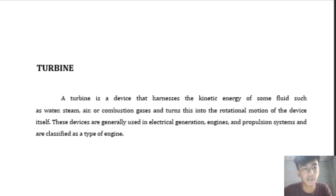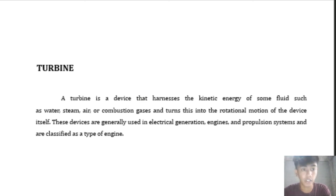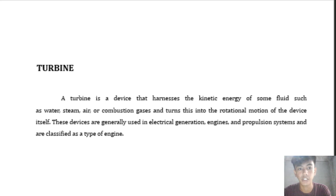A turbine is a device that harnesses the kinetic energy of a fluid — such as water, steam, air, or combustion gases — and turns this into the rotational motion of the device itself. These devices are generally used in electrical generation, engines, and propulsion systems, and are classified as a type of engine.